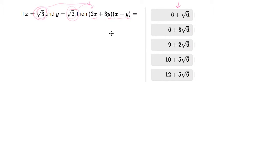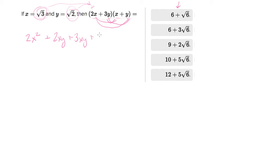I prefer to FOIL the expression as-is before substitution, so let's do that first. Two times 2x squared is the first times the first, then do the outside, then the inside, then the last. So we get 2x squared plus 2xy plus 3xy plus 3y squared, which simplifies to 2x squared plus 5xy plus 3y squared.